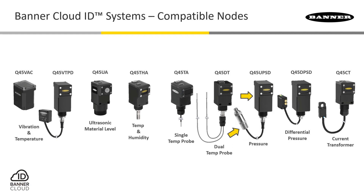We also have similar nodes for differential pressure applications, like filter and vacuum lines, HVAC and duct pressure, or other low pressure applications. Again, be sure to purchase the node and the differential pressure sensor that best suits your deployment.